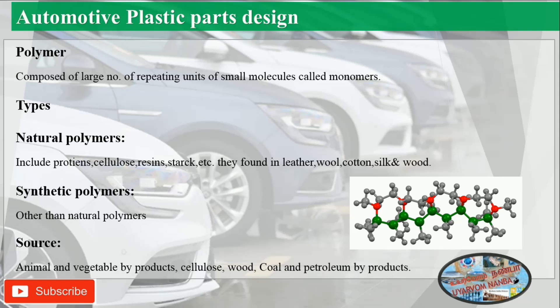The second one is synthetic polymers. Other than natural polymers are called synthetic polymers. Plastics are taken from animal and vegetable byproducts, cellulose, wood, coal, and petroleum byproducts.